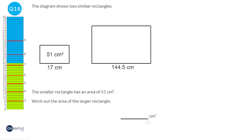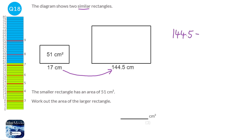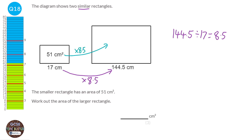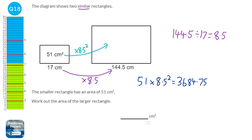Since the rectangles are similar, we find the linear scale factor by doing 144.5 divided by 17, which gives 8.5. The area scale factor is the linear scale factor squared. So we do 51 times 8.5 squared, which gives 3,684.75.